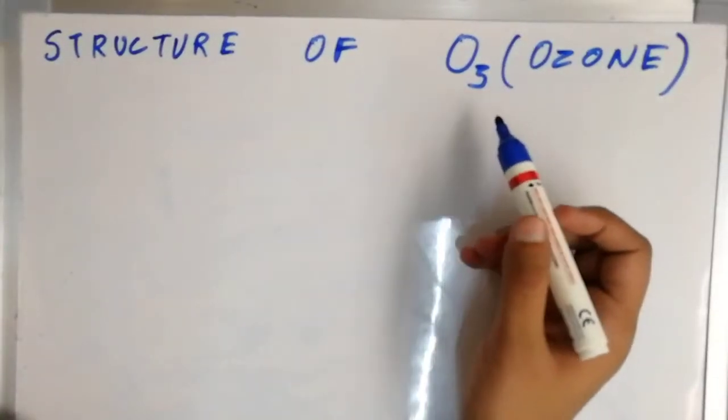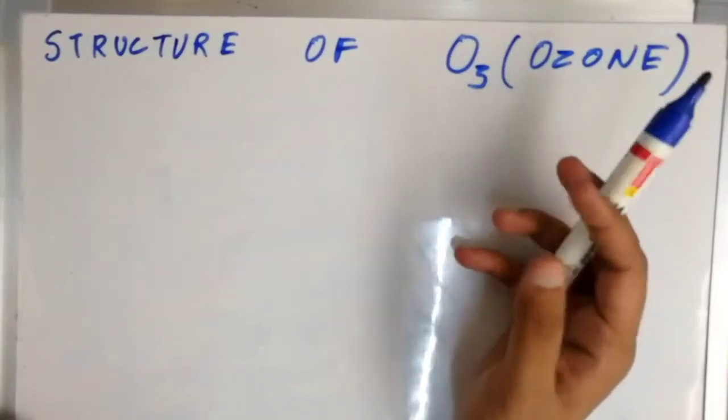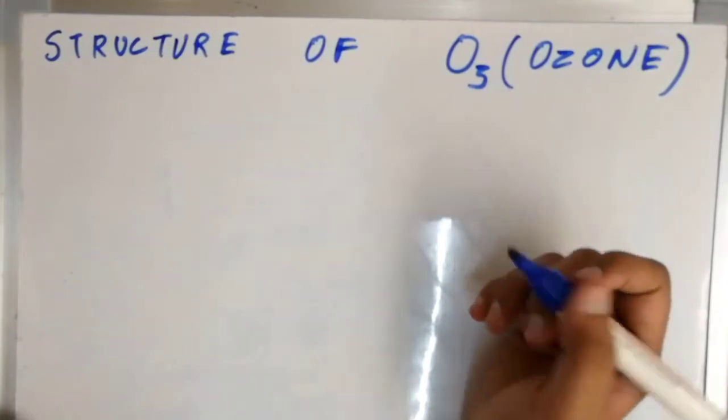Okay, so we want to draw the structure of ozone which is O3 having three oxygen atoms. So how are we going to draw it?